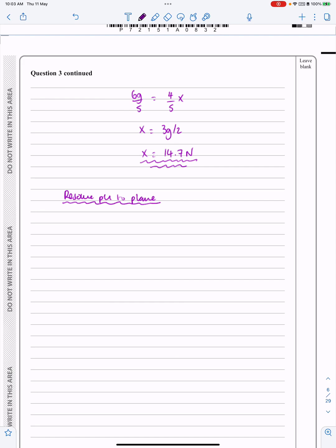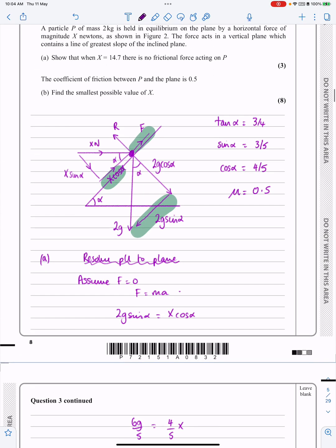What that's going to give me then is resolve parallel to the plane. F equals ma. I've got the F and X cos alpha acting in the same direction, balancing out with 2g sin alpha. There is actually no motion, just on the point of moving. Let's do resolve perpendicular to the plane.